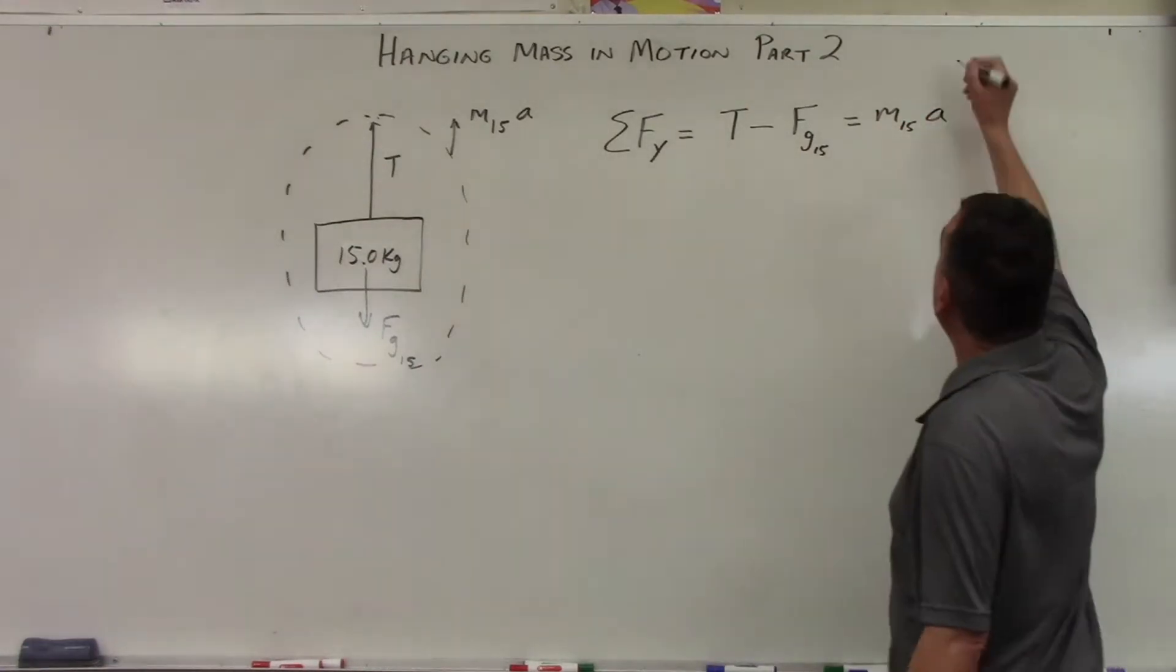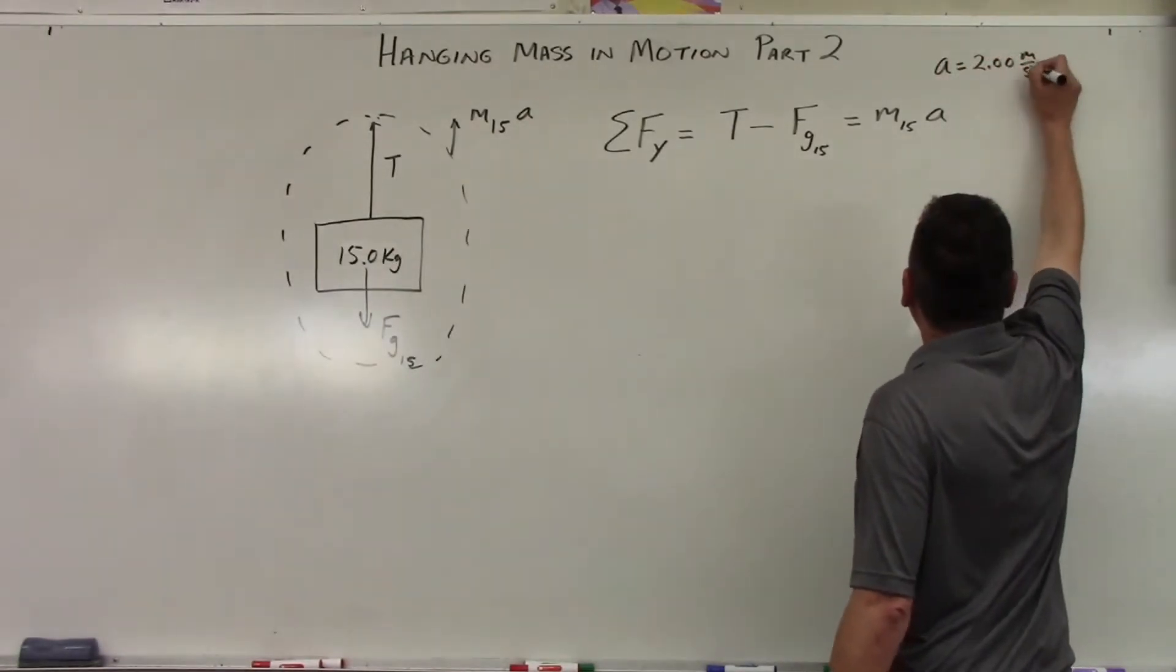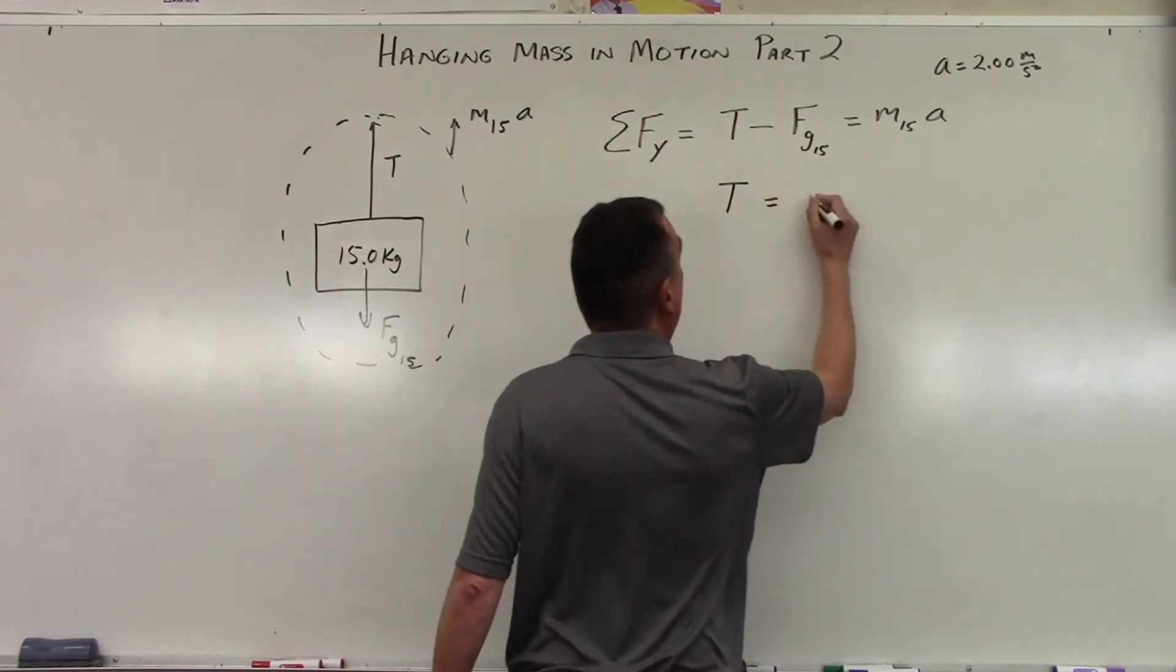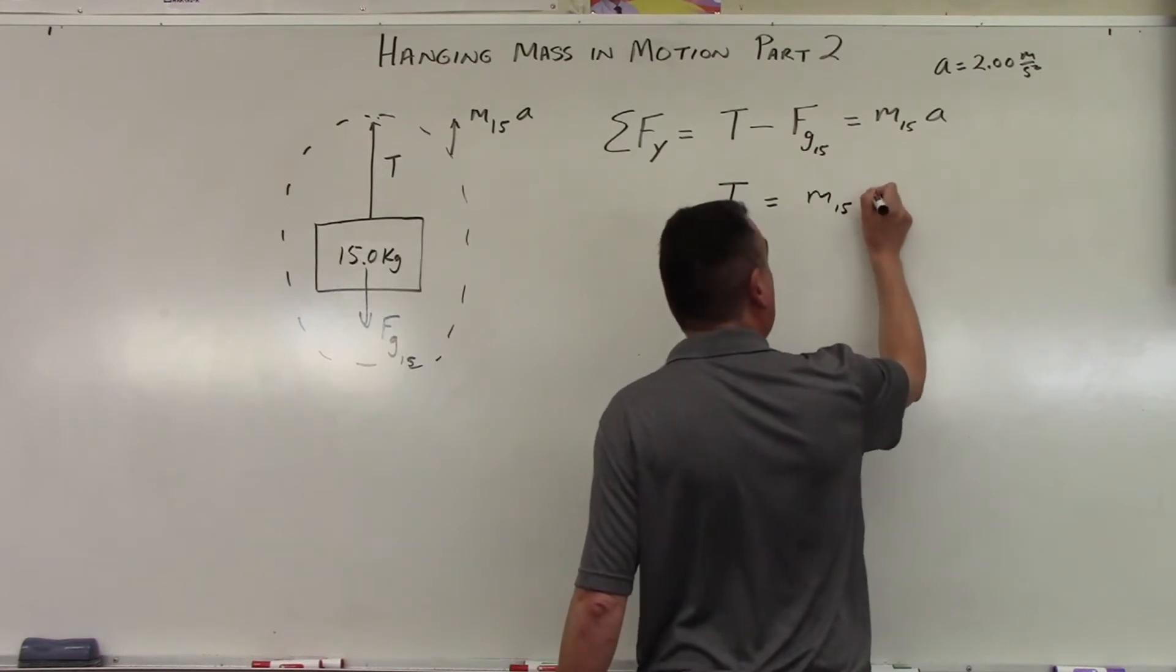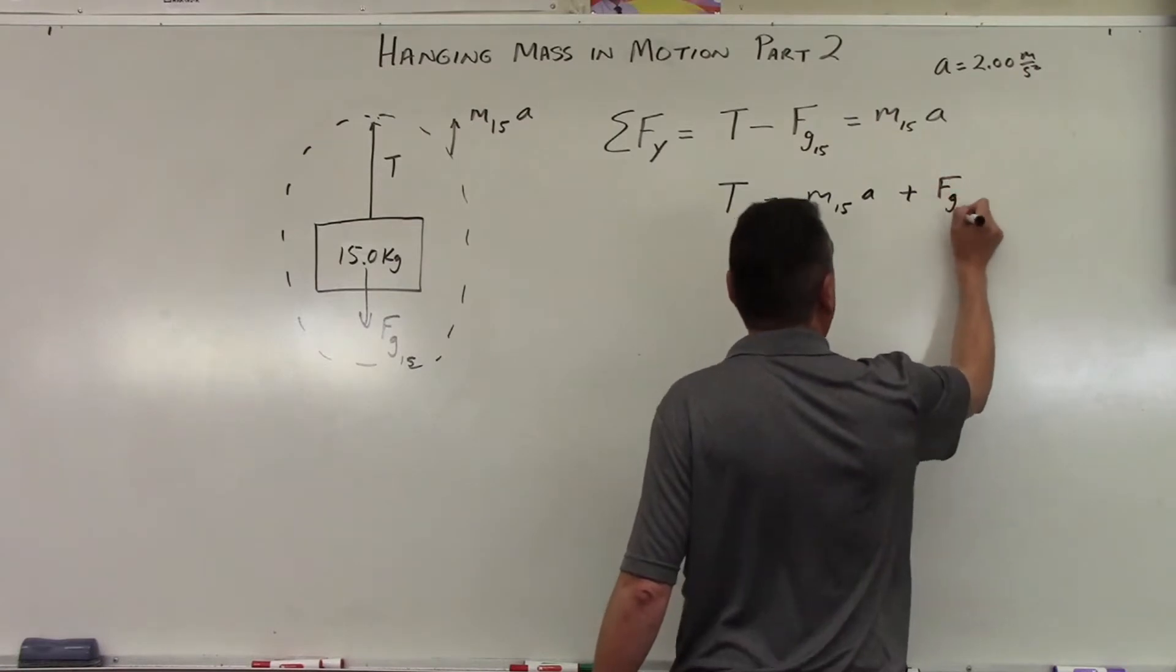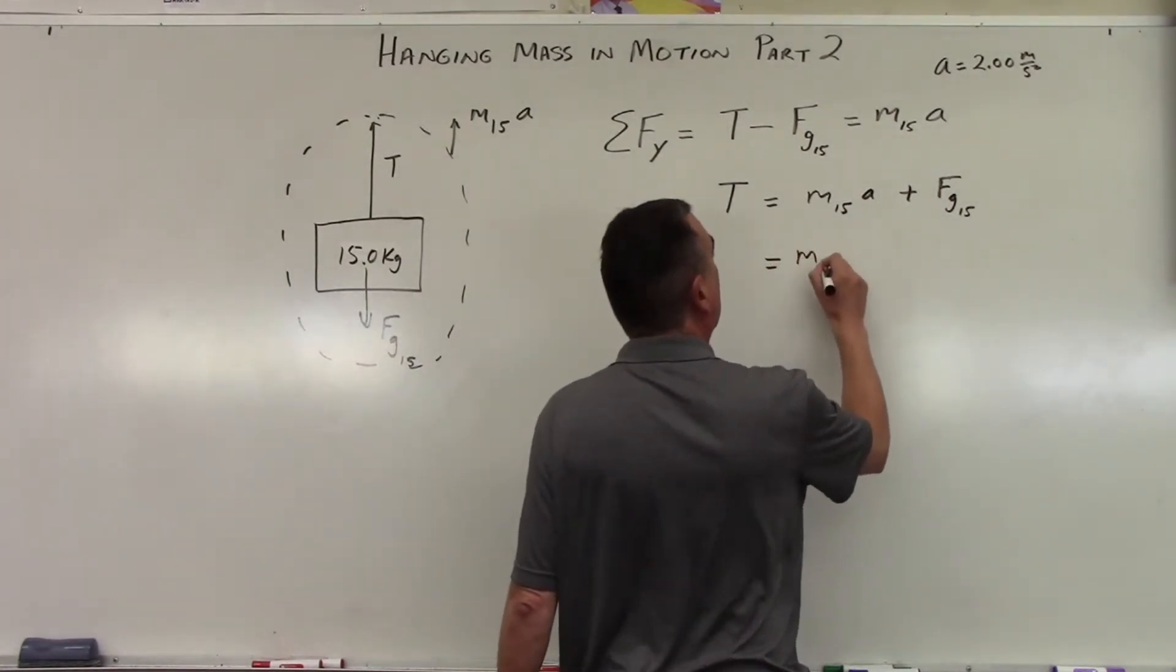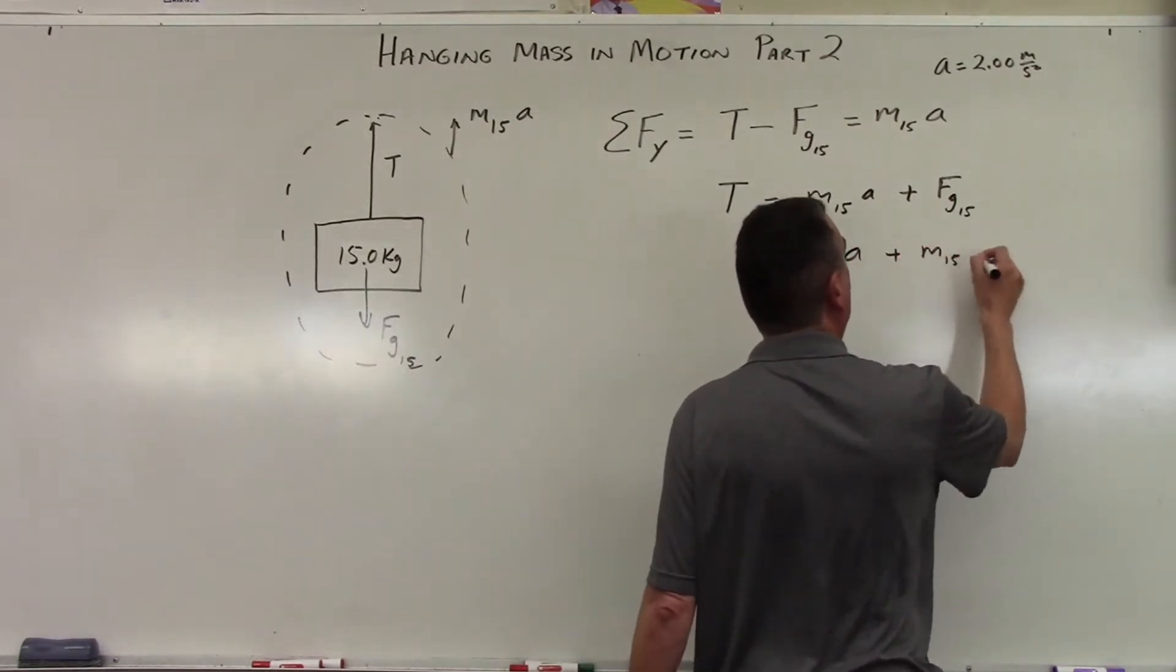So let's give it an acceleration. a equals 2.00 meters per second squared. Let's solve for T. We're going to add Fg sub 15 to both sides. And that means mass of 15 times a plus Fg sub 15. I'm going to write the mathematical equation of it.